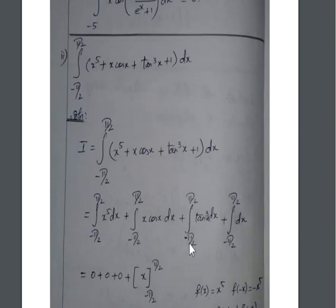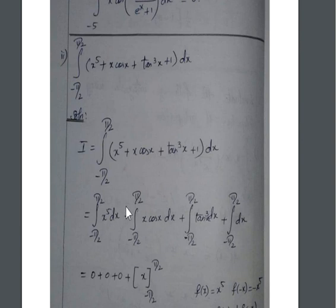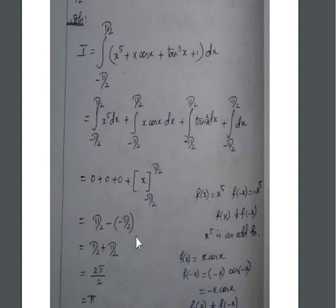The second integral is from −π/2 to π/2 of (x⁵ + x·cosx + tan³x + 1) dx. We split this into four separate integrals using the property that the integral of a sum equals the sum of the integrals: ∫x⁵ dx, ∫x·cosx dx, ∫tan³x dx, and ∫1 dx.